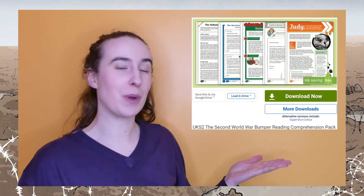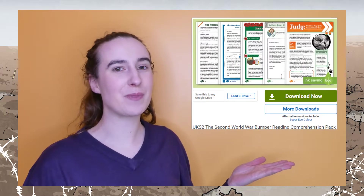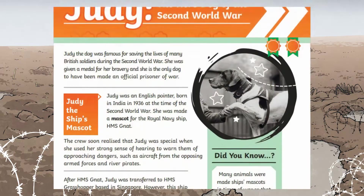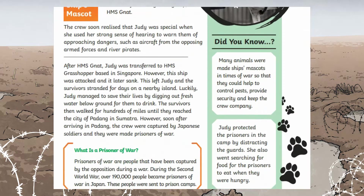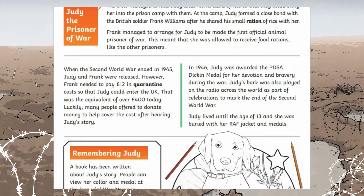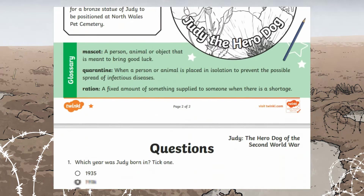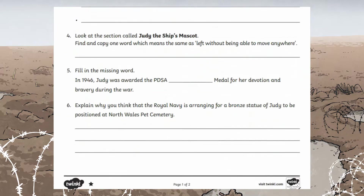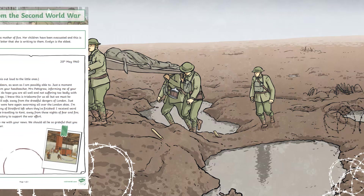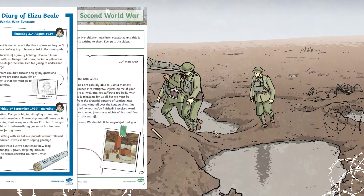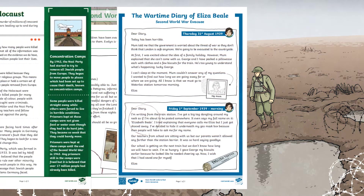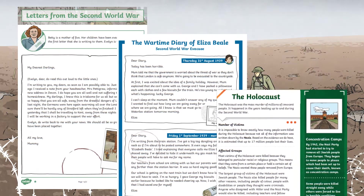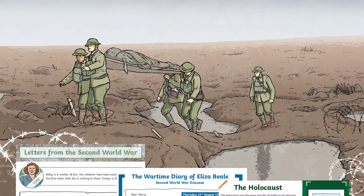Our World War II Bumper Reading Comprehension Pack would be an excellent addition to your reading sessions. This pack contains five reading comprehensions, all of which are differentiated and all include a question sheet for learners to answer after reading the text. The comprehension texts include letters, diary entries and non-chronological reports about a range of topics such as dogs in the war, Remembrance Day and evacuees.